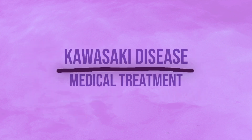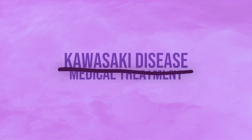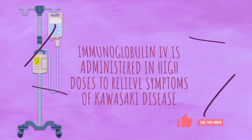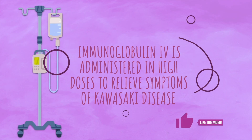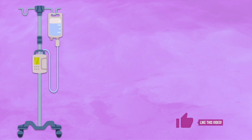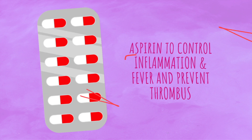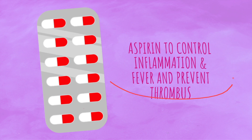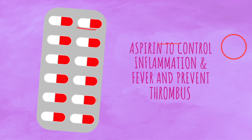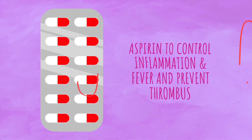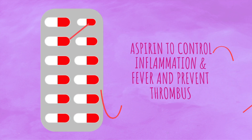Now let's discuss the medical treatment for Kawasaki disease. Kawasaki disease is treated with a high dose of intravenous immunoglobulin therapy to reduce symptoms and prevent coronary artery abnormalities. The child is prescribed aspirin to control inflammation and fever. The child may have to take aspirin for as long as one year in low doses to prevent the risk of clotting.